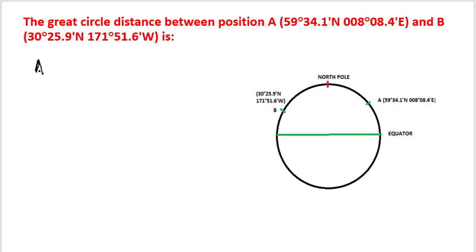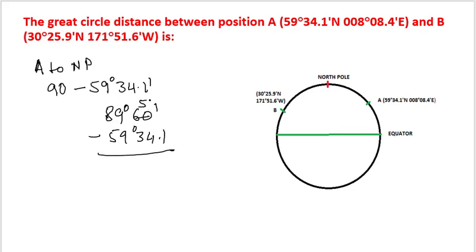Distance from A to north pole is going to be 90 minus 59 degrees 34.1 minutes. 90 degrees we can write as 89 degrees 60 minutes minus 59 degrees 34.1. This will be 30 degrees 25.9 minutes.